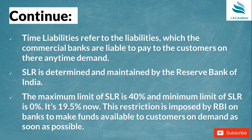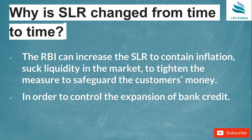At present, the SLR percentage is 19.5%. This 19.5% of money is kept with RBI to make funds available to customers in case of any crisis. RBI can increase the SLR to contain inflation — inflation being an increase in the price level and customer demand — which reduces the purchasing power of money and sucks liquidity from the market, tightening measures to control the expansion of bank credit.